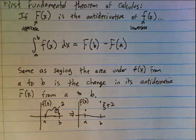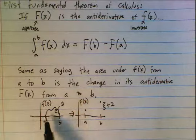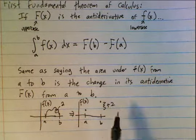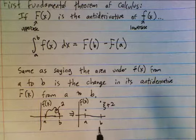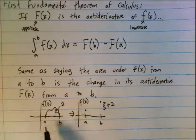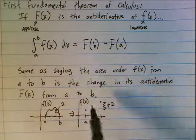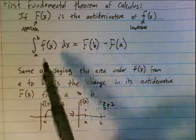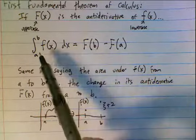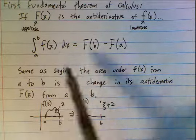Previously we were using this fact — like if this was the velocity curve — that the area under the velocity curve gives the change in position. Now we're going the other way: using our knowledge of the position graph equation to find the exact area under the velocity curve. Capital F is the antiderivative and lowercase f is the derivative — a common notation convention.